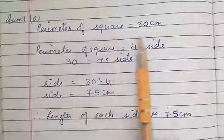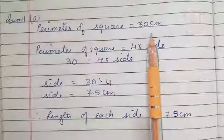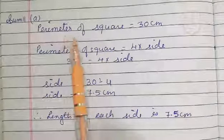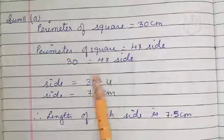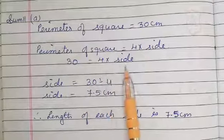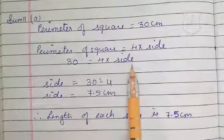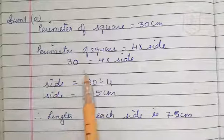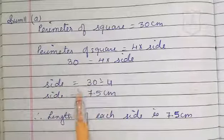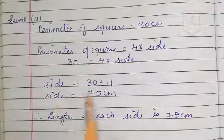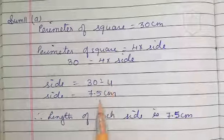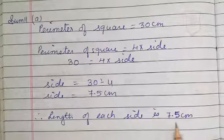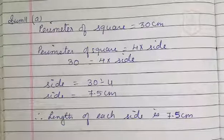Solution for part A of question 11. The perimeter of the square is 30 centimeters. Perimeter of the square = 4 × side, so 30 = 4 × side. To find the side, we divide 30 by 4. Side = 30 ÷ 4 = 7.5. Therefore, the length of each side is 7.5 centimeters if the string is used in the form of a square.